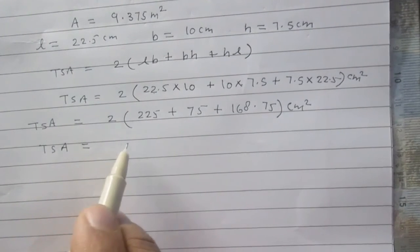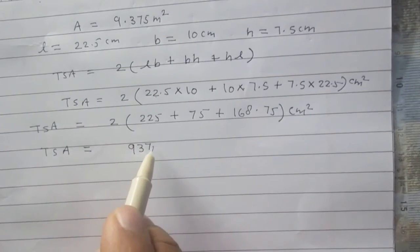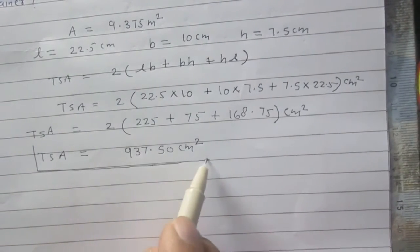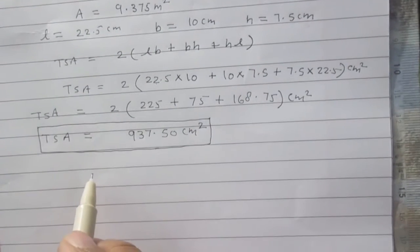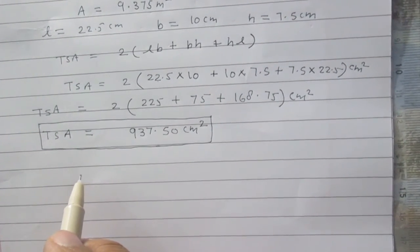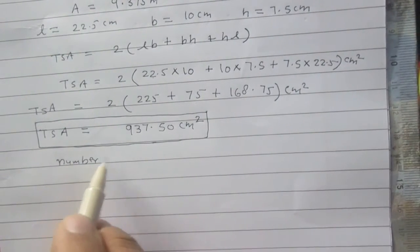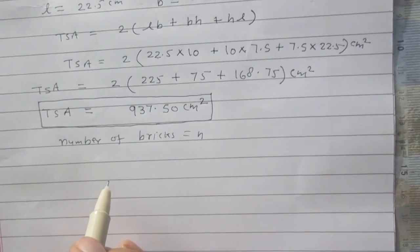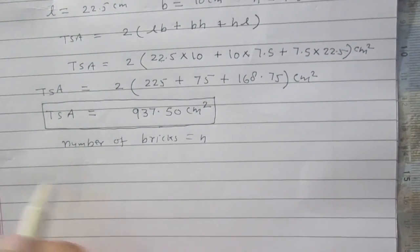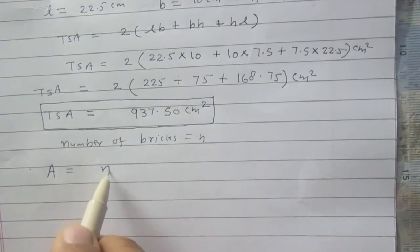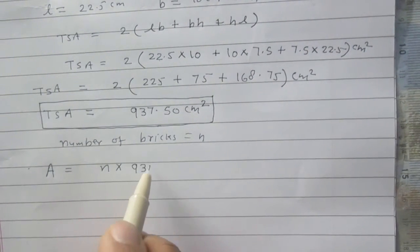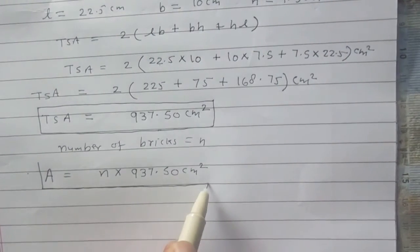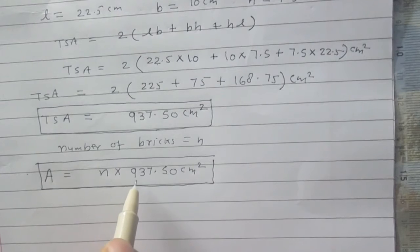The total surface area of this brick is 937.50 cm². Now let the number of bricks that can be painted be equal to n. The total area of all bricks is equal to n × 937.50 cm².